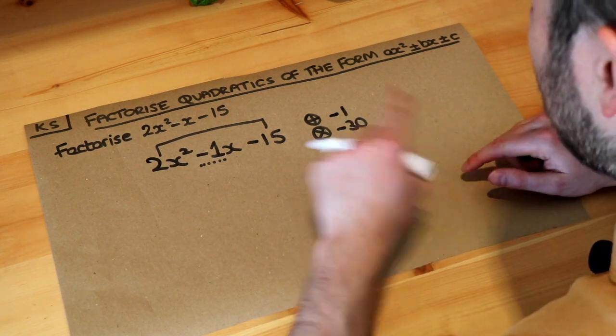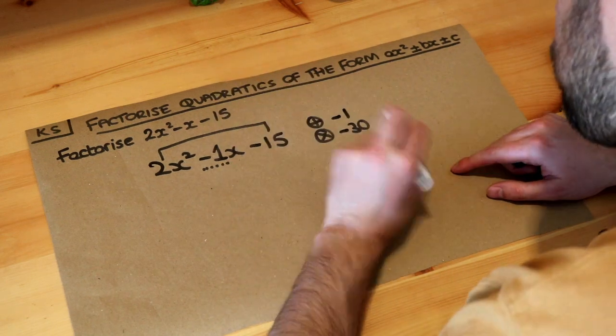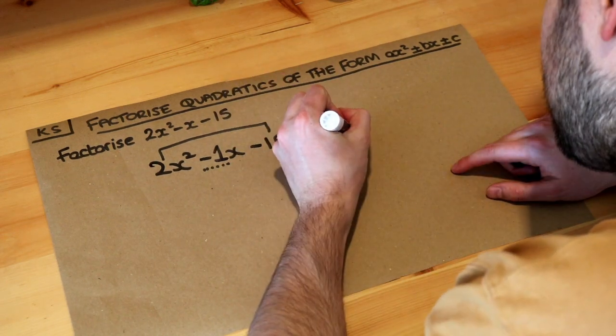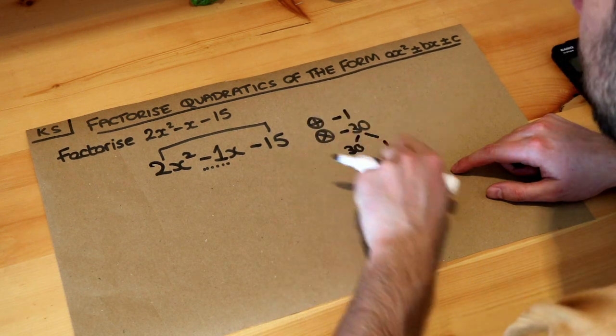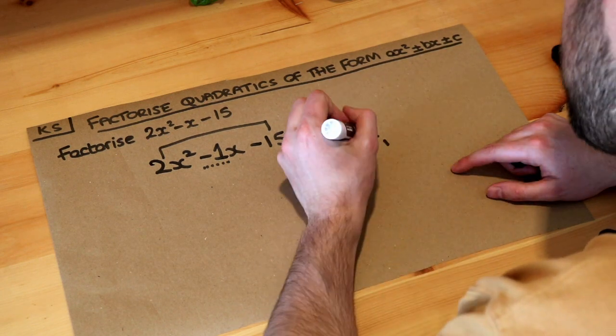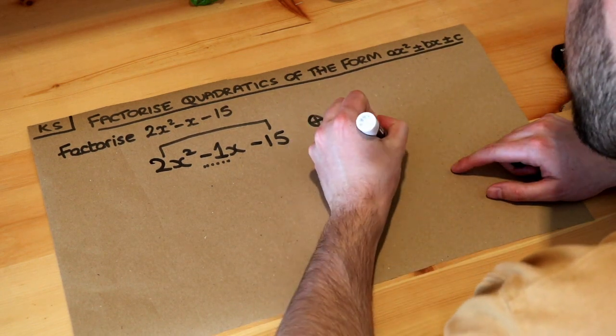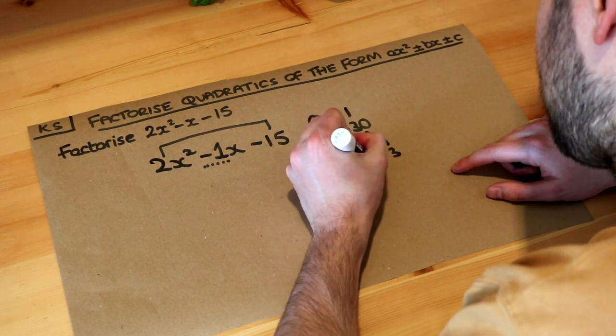Now, at this point, we need to find these two numbers that times give minus 30, add to give minus 1. I find it helpful to write out the factor pairs of 30. So 30 could be 30 and 1, just forgetting the negative on the front for the moment. Do they add or subtract in any way to get minus 1? No, they don't. What about, say, 10 and 3? No, they don't add or subtract in any way to make 1.